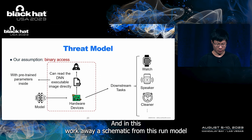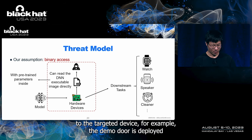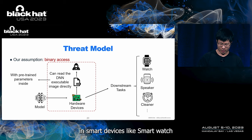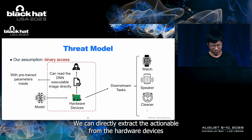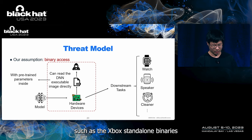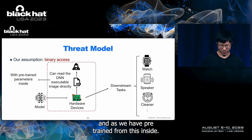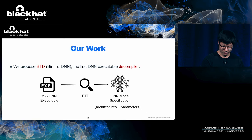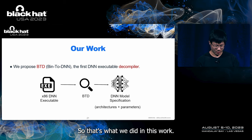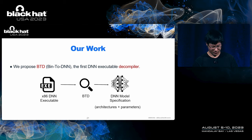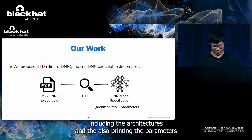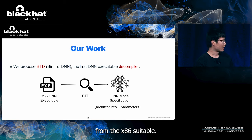In this work, we assume a different threat model. Specifically, if we already have physical access to the target device — for example, if the DN model is deployed in smart devices like a smartwatch, speaker, or cleaner — we can be more aggressive and directly extract the DN executable from the hardware device. Such DN executables are standalone binaries that have pre-trained parameters inside. Given the extracted DN executable file, we proposed BTD, the first DN executable decompiler, aiming to analyze and extract high-level DN model specifications, including DN architectures and pre-trained parameters from the X86 DN executable.